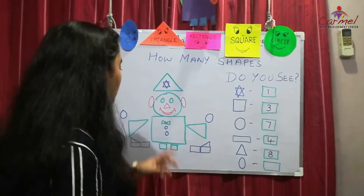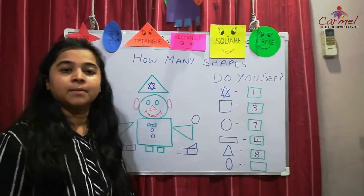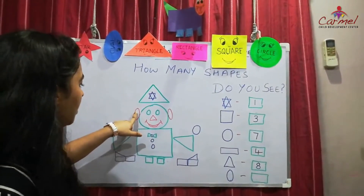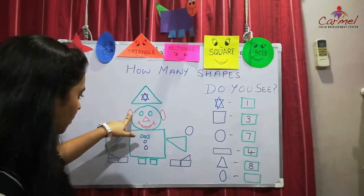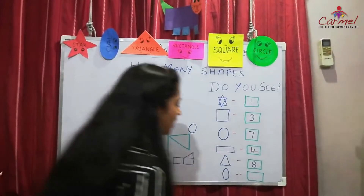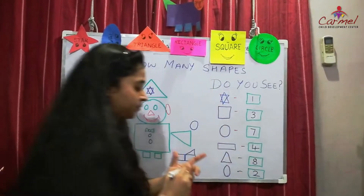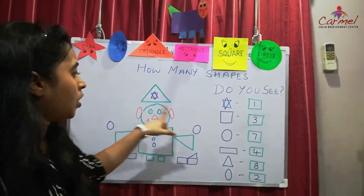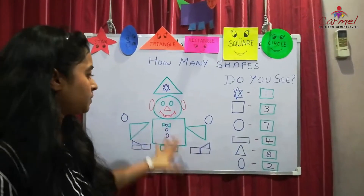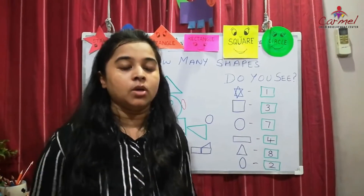Now find out how many oval shapes there are. How many are there? There are 2 oval shapes. Very good! Children, you have to copy all those shapes and pictures into your notebook neatly.